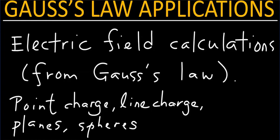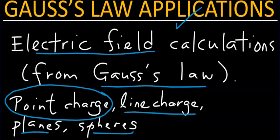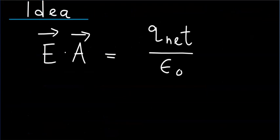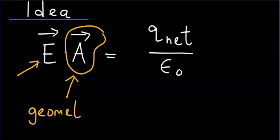In this video, we will discuss the applications of Gauss's law. In particular, we will see how to use Gauss's law to calculate electric fields due to systems such as a point charge system, an infinite line charge system, planes, and spheres. The idea of using Gauss's law to calculate electric fields is pretty simple. In order to calculate electric fields for a given system, we need to determine the area factor, and this is governed by the geometry of the system.